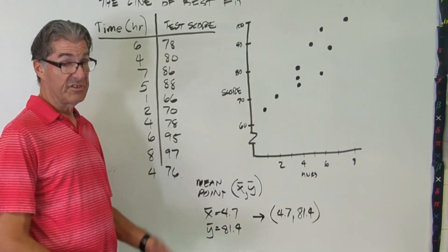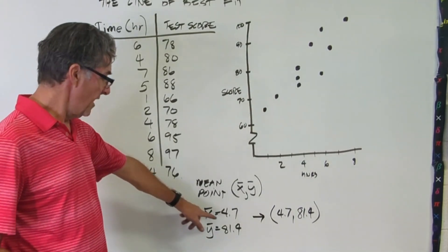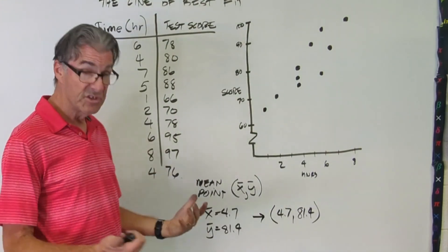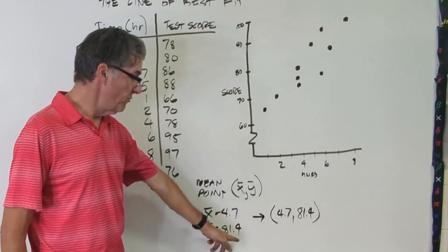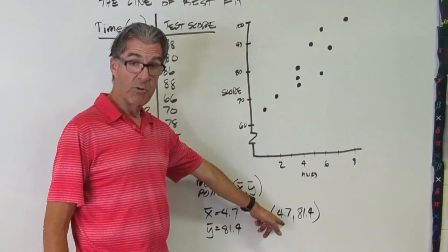So what I did is just pulled out my calculator and did my calc on my x bar. And I got 4.7 for the average of the time spent. So the average time spent studying was 4.7 hours. And then the average test score was 81.4. So the mean point is 4.7, 81.4.